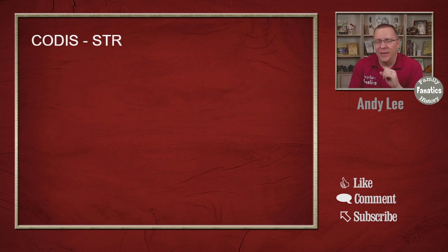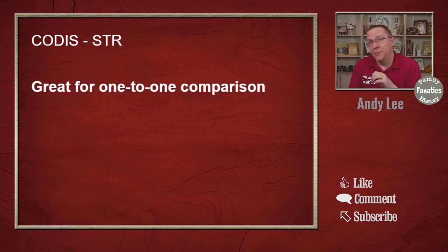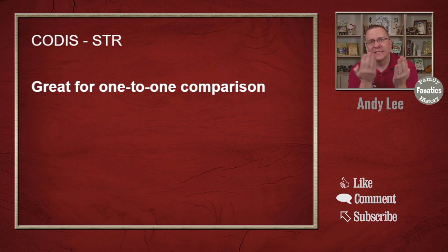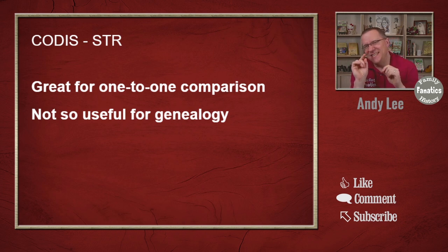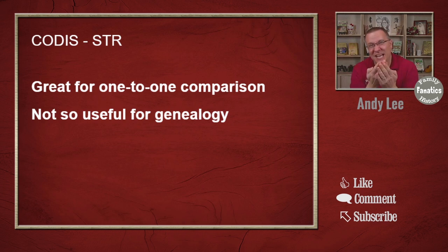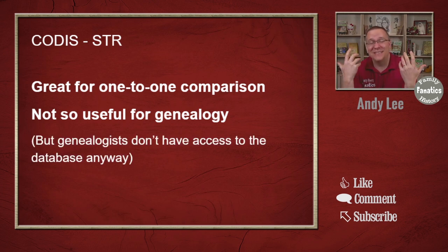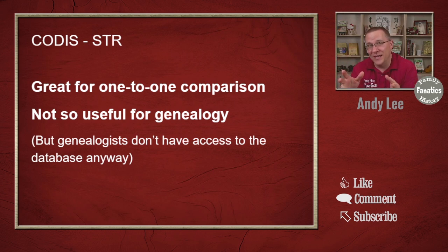The CODIS STR database is great for one-to-one comparisons. In other words, if you have a known sample and you have an unknown sample, then you can compare the two, and if they match, then they're the same sample — same person. Because of this, it's not so useful for genealogy, because if you don't have an exact match, it really doesn't tell you how far distant that person is. But don't worry, because as genealogists we don't have access to that database anyway — it is a law enforcement database only.